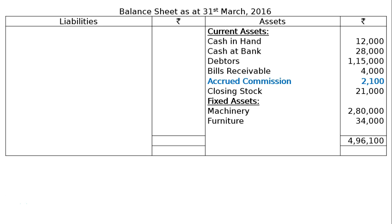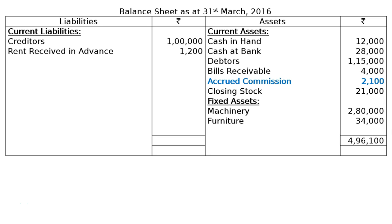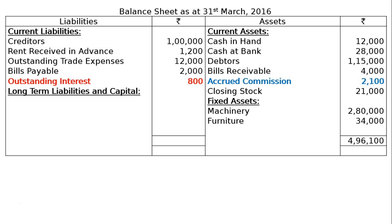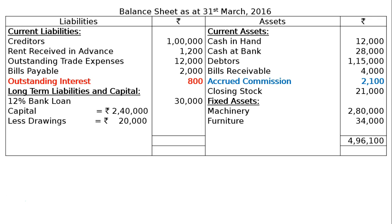On the liabilities side, current liabilities: creditors Rs. 1,00,000, rent received in advance Rs. 1,200 (income received in advance), outstanding trade expenses Rs. 12,000, bills payable Rs. 2,000, outstanding interest Rs. 800. Long-term liabilities and capital: 12% bank loan Rs. 30,000. Capital Rs. 2,40,000, less drawings Rs. 20,000, add net profit Rs. 1,30,100 — totalling Rs. 3,50,100. Total liabilities Rs. 4,96,100, and the balance sheet tallies.